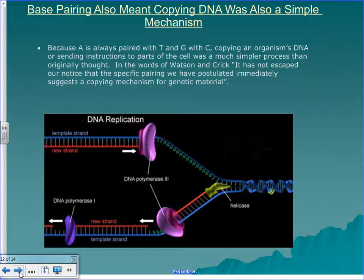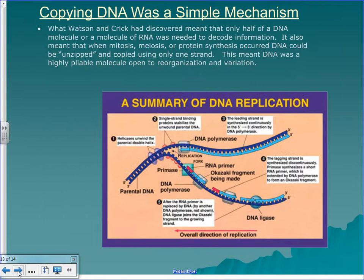Watson and Crick said, 'It has not escaped our notice that the specific pairing we have postulated immediately suggests a copying mechanism for genetic material.' They realized that since A and T must go together and C and G must go together, it would be really easy to copy this stuff — you just have to build a complementary strand. What Watson and Crick discovered meant that only half a DNA molecule or a molecule of RNA was needed to decode or encode information. It also meant that when mitosis, meiosis, or protein synthesis occurred, DNA could be unzipped and copied using only one side. Your cell may actually need to copy both sides of the DNA strand to make enough RNA for the ribosomes.